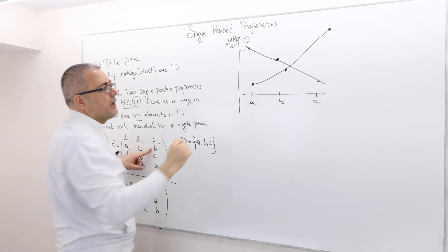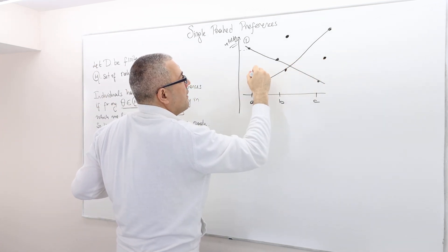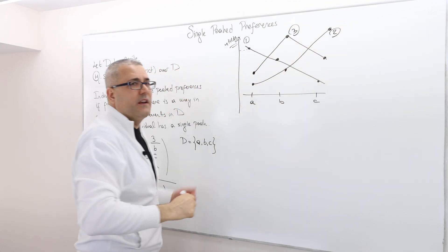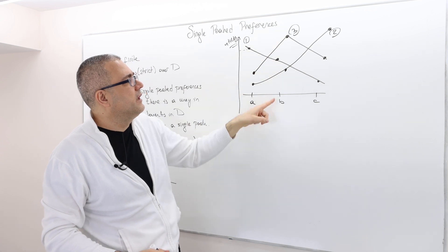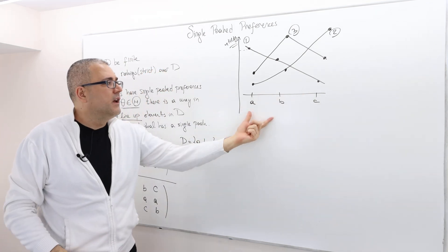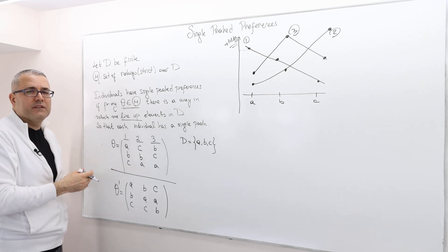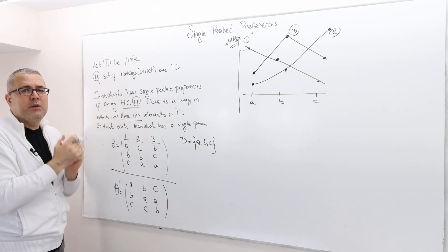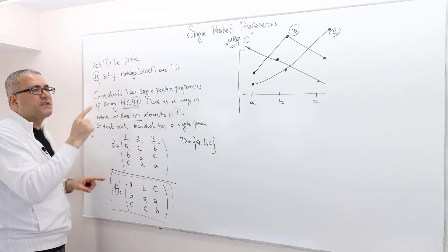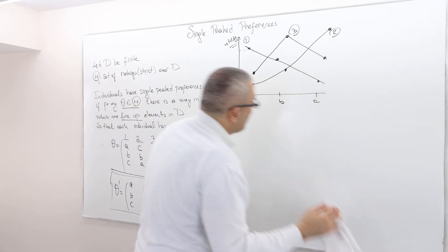For agent three, B is her top, then C, then A. Connecting those dots gives a single peak at B. So there is a way of lining up the candidates A, B, C such that each agent has a single peak. Therefore, in this preference profile the agents do have single-peaked preferences, and this profile is in my set of single-peaked preference domains. I need to keep the same line for all agents — that's important.